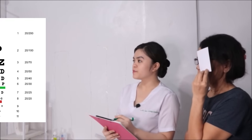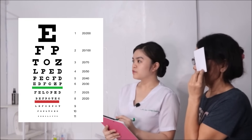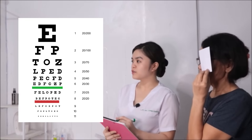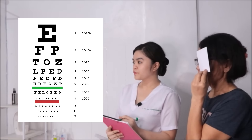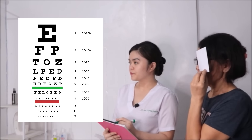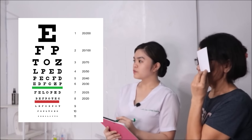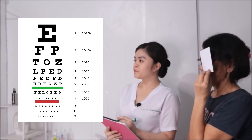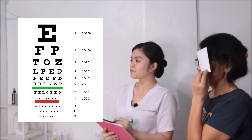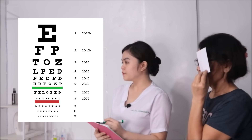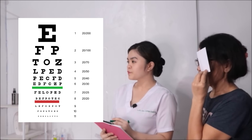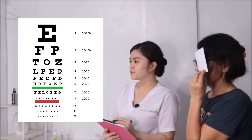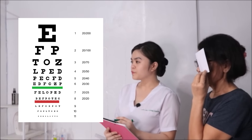Now cover the left eye and read starting from E: E-E-F-P-D-O-Z. L-P-E-D. P-E-C-F-D. E-D-R-C-Z-P. E-L-O-P-Z-D. S-E-F-P-O-R-Z-Z. Okay, ma'am, wait a minute.